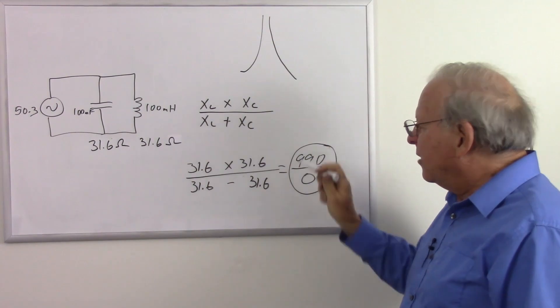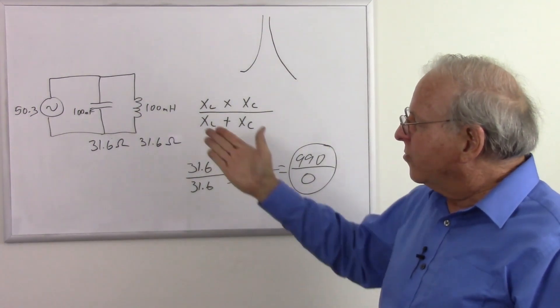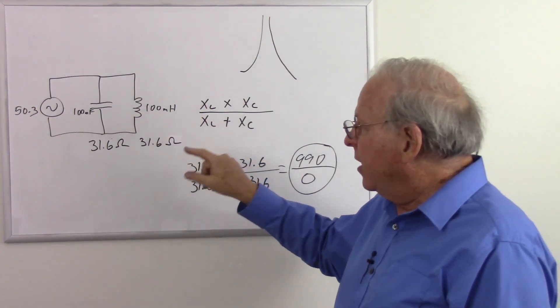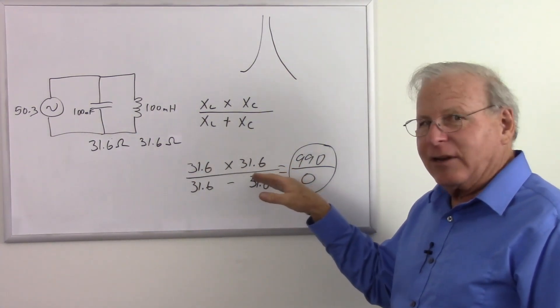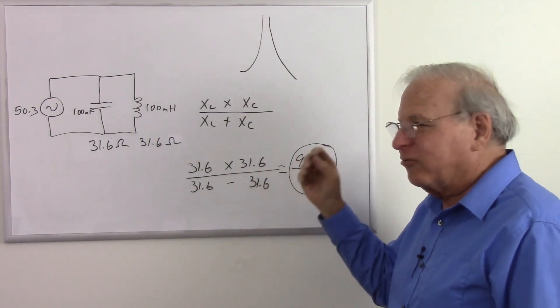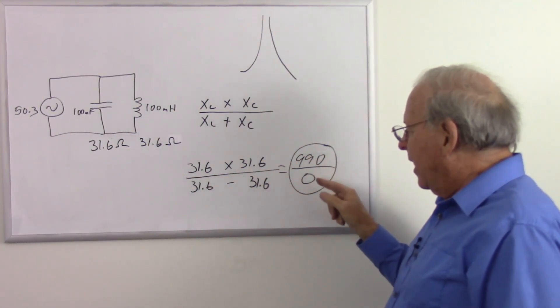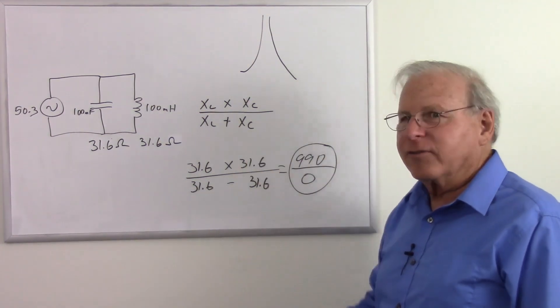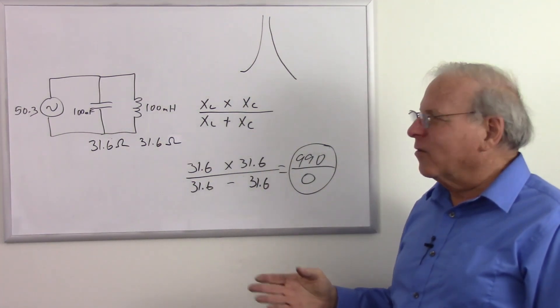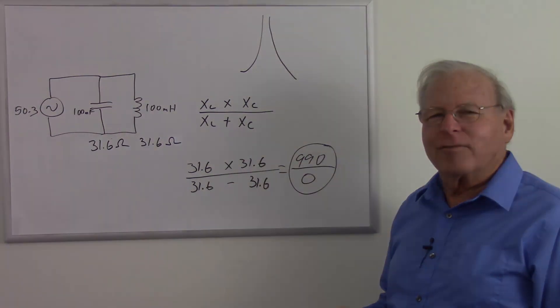So that shows that this works even at the resonant frequency. If we do this math, remember I simplified this. This is complex numbers, but we found out that we don't have to treat them as complex numbers. Just remember a couple of rules. And so that did bring us up to getting infinity at the resonant frequency. So if you saw that and said, hey, that doesn't look right? Well, here I showed that it actually is right.